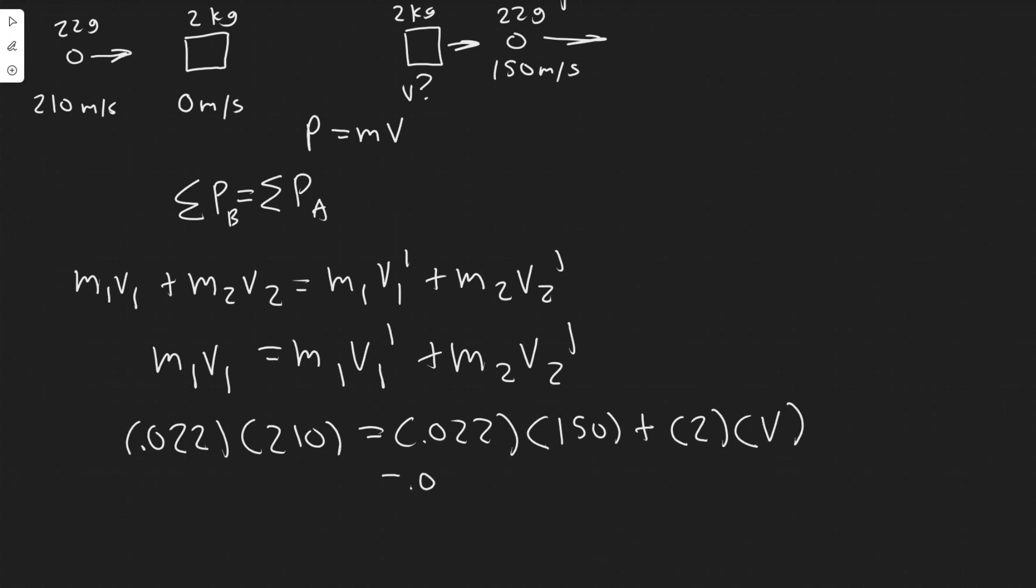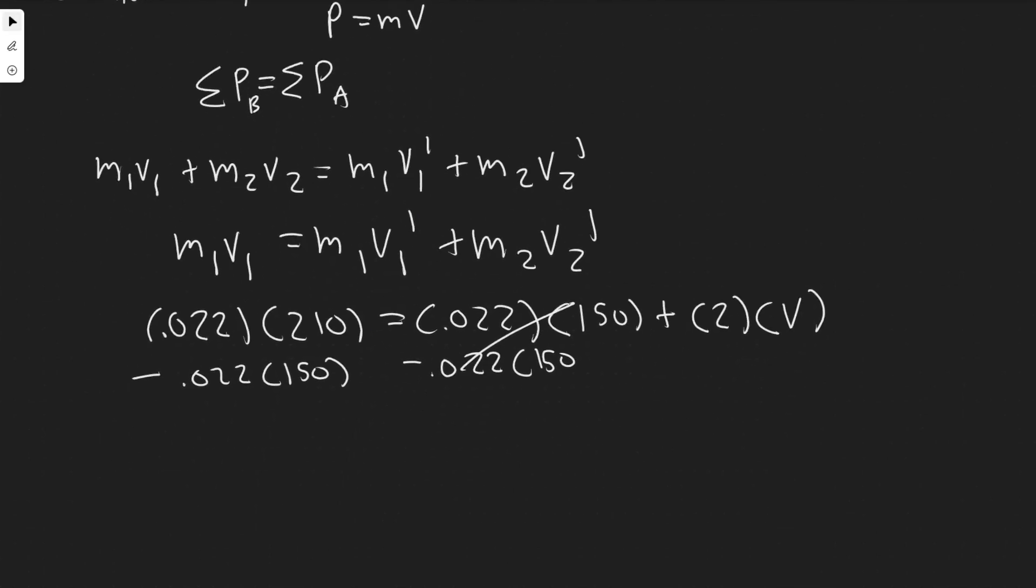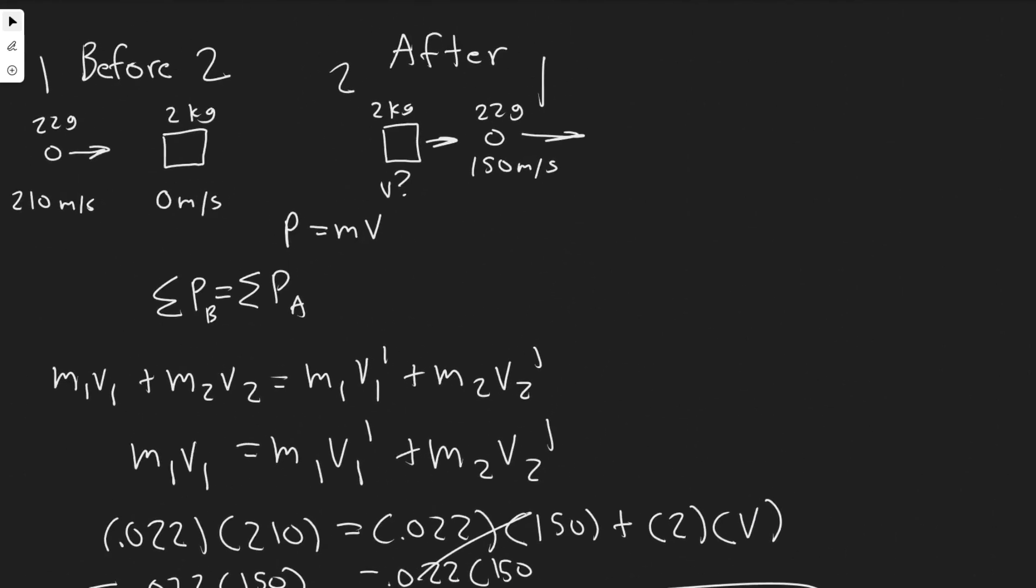So now what we got to do, minus this to the other side. So minus 0.022 times 150. Let me go ahead and do that. So 0.022 times 210 minus 0.022 times 150 is 1.32. So it's going to be equal to 2 times V then, divided by 2. And you'll be finding the velocity is 0.66. And then keep in mind the units for velocity we were using was meters per second. So 0.66 meters per second, that's going to be the velocity of our block after.